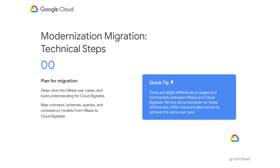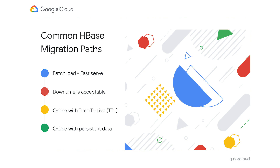When looking at migrating your existing workloads into Cloud Bigtable, the first step is always preparation and planning for the migration. Typically, you'll do a deep dive into the different use cases you're running on HBase, and perhaps go down a different path for different types of use cases. It's really good to build up an understanding of Cloud Bigtable and where some of the concepts and capabilities might differ and what the alternatives are. You want to map concepts, schema design, queries, and how you're thinking about data consistency from HBase to Cloud Bigtable. There are some slight differences in supported functionality between HBase and Cloud Bigtable, and I encourage you to read through the documentation and understand where those differences may lie early in the process.